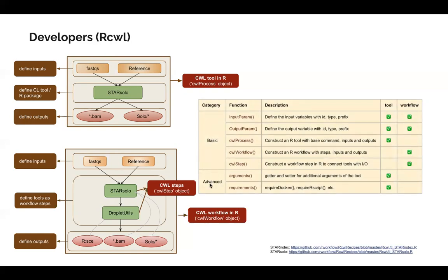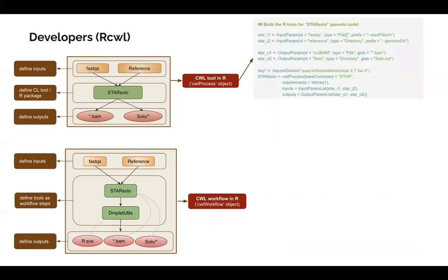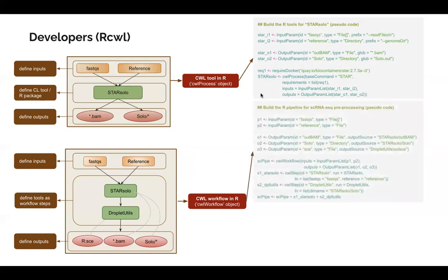This table shows some basic and advanced functions to build RCWL tools and RCWL pipelines. Here we use pseudo-code to show how to do this programmatically. The first step is to build the tool: for STARsolo, we use input parameters to define the inputs and output parameters to define outputs. We specify the Docker image needed for the STAR tool, define the base command, and then construct the CWL process and give it the name STARsolo, which is ready to be used as a CWL tool in R. The second step is building the pipeline: we define the input and output parameters, define the workflow where two tools are involved as CWL steps, and simply add the tools together into a pipeline.